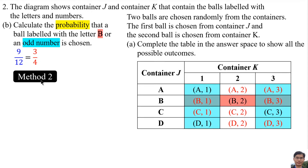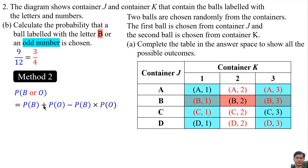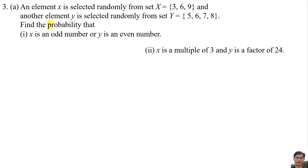Method 2. Let the event of getting a ball labeled with the letter B be B, and let the event of getting an odd number be O. By using the formula P(B) + P(O) - P(B) × P(O). P(B) is 1 over 4: 1 because there is only one B, 4 because there are 4 letters. P(O) is 2 over 3: 2 because there are 2 odd numbers, 1 and 3; 3 because there are 3 numbers. Therefore, the answer is 3 over 4.